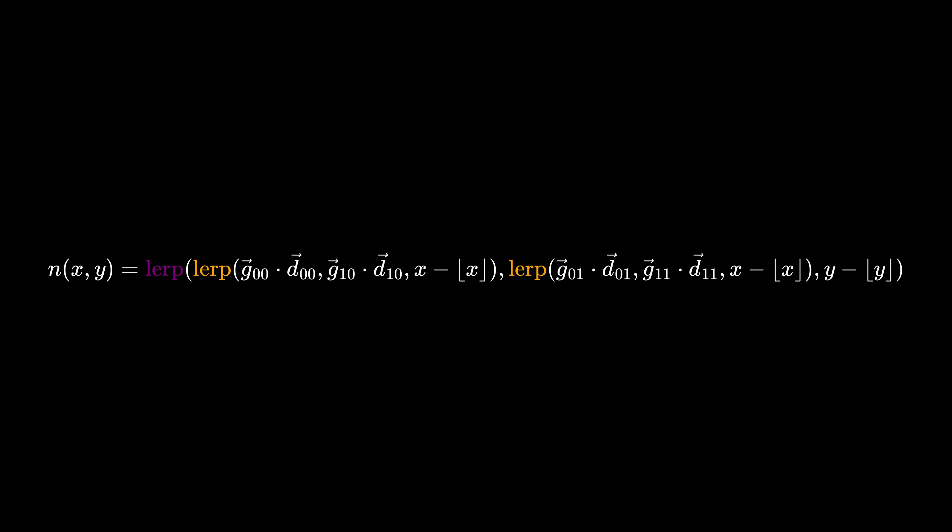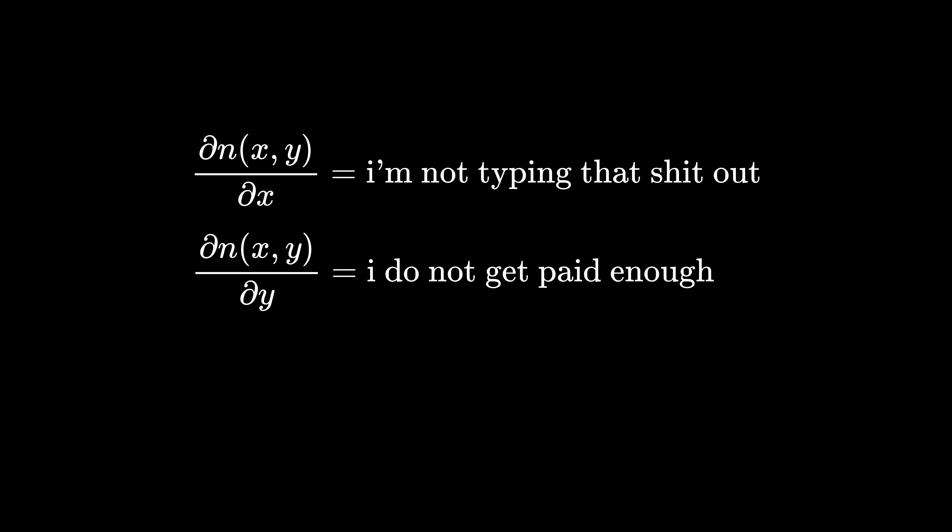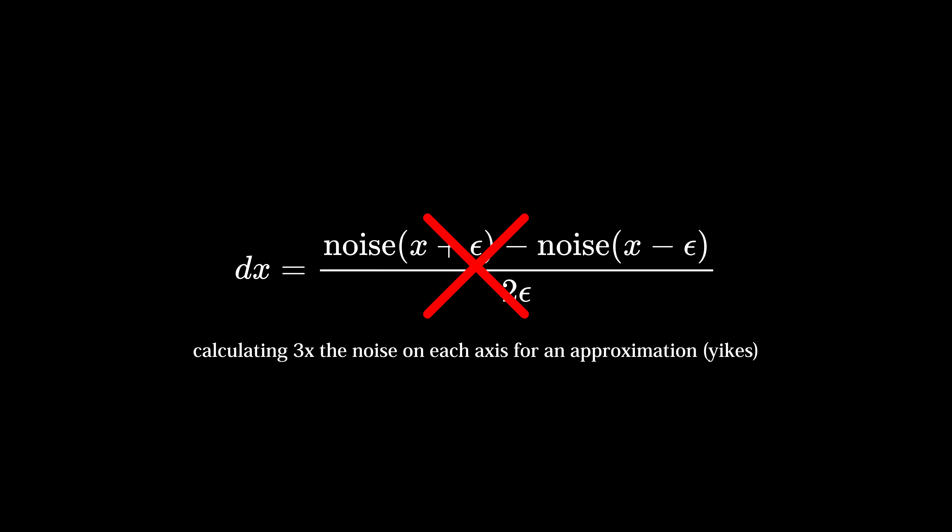By taking partial derivatives with respect to each axis and obtaining the gradient that way, avoiding the expensive central difference calculation, and also getting perfectly accurate normal vectors. A total win-win. Unfortunately, while this does work, our smoothstep ruins everything by introducing discontinuities in the gradient, as demonstrated here by Inigo Keyless.